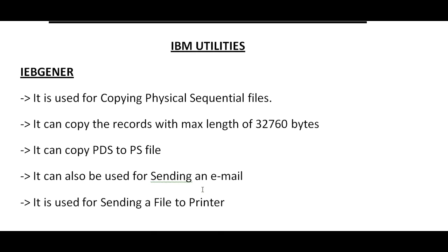There will be reports that need to be sent to a customer or client. On the mainframe, batch jobs will be running daily, and based on those batch jobs they will send a notification to clients stating that the batch has been started, or there might be reports that need to be sent to a customer. IEBGENER is also used for sending a file to a printer. This email and printer functionality plays a very key role in real time.